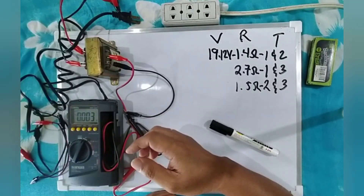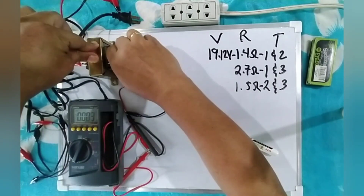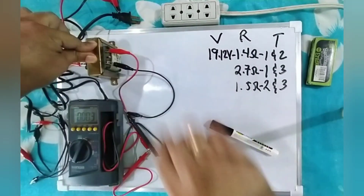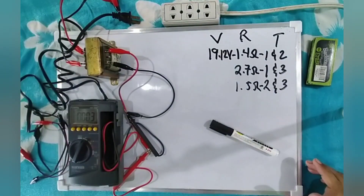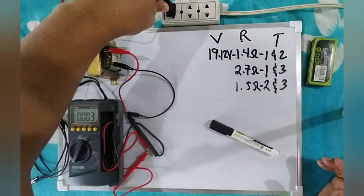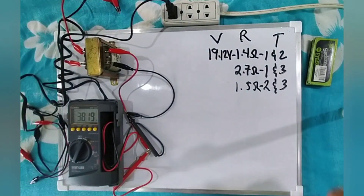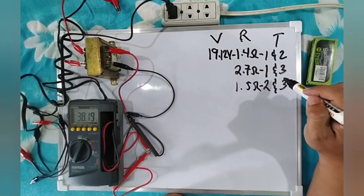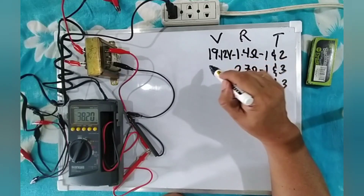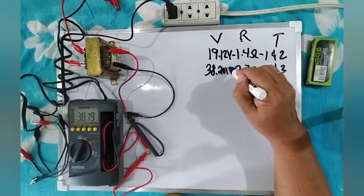I'm going to remove the connection from terminal two and connect it to terminal three, then plug the AC plug back in. The voltage measurement of terminal one and three is 38.20 volts.